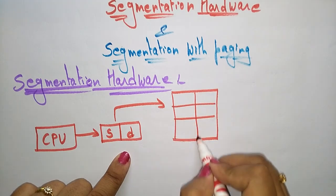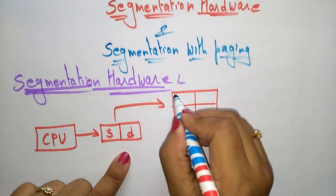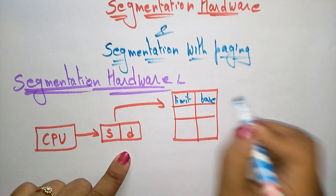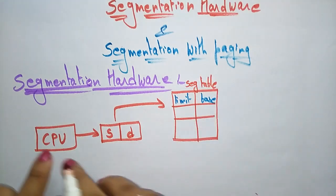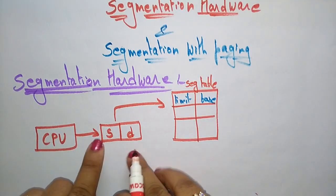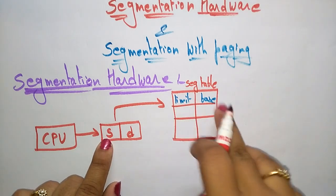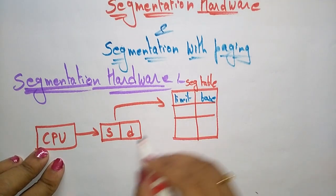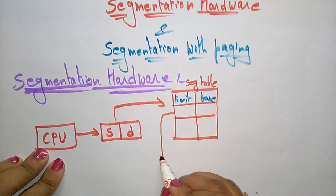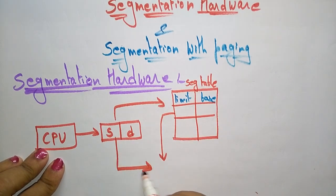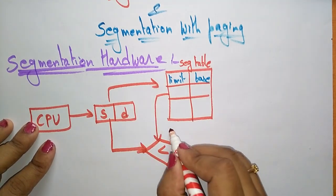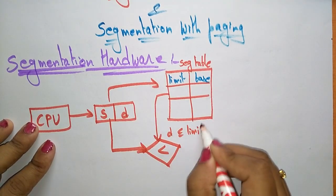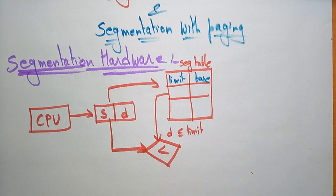The segment table stores the limit and base for each segment that the CPU sends. We check whether the offset is less than or equal to the limit or not — this is the same condition I explained when discussing segmentation.